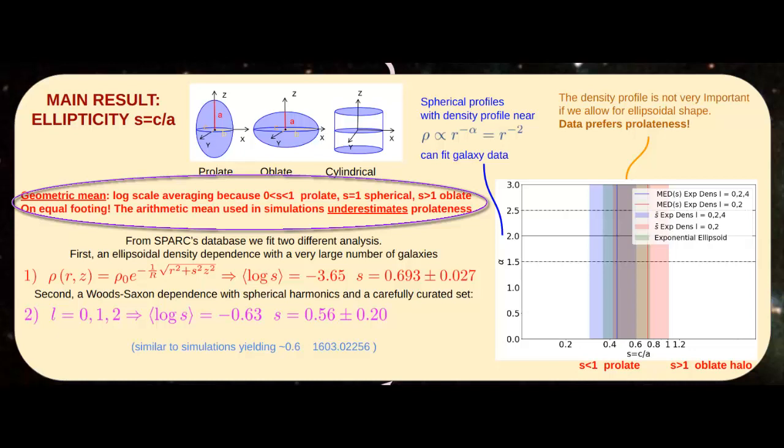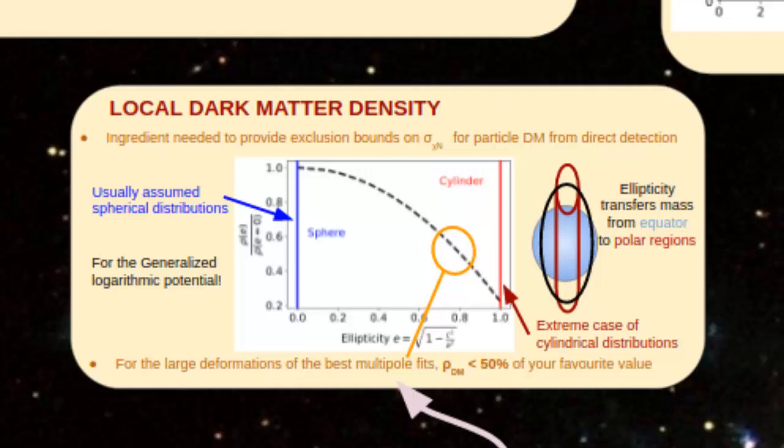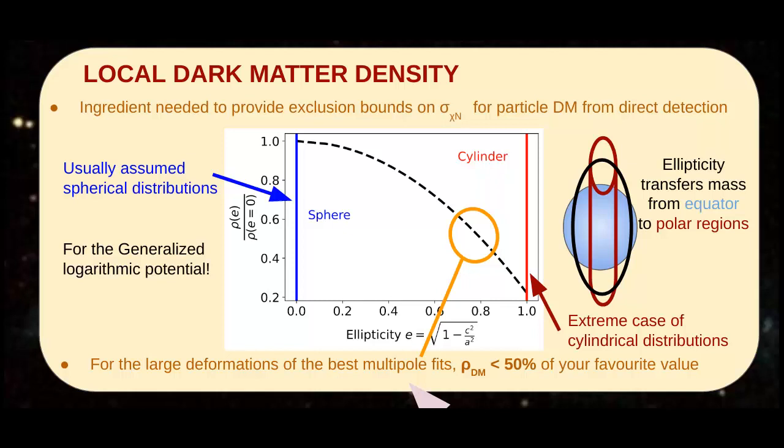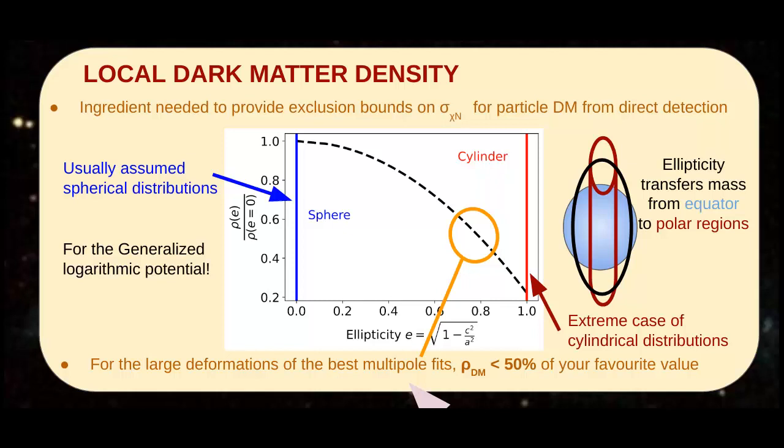Employing the arithmetic mean introduces a bias toward oblateness. If the results for a typical spiral galaxy are adopted for the Milky Way, we find that the supposed dark matter density near Earth can be up to a factor 2 smaller than usually employed to characterize direct searches, since dark matter is not concentrated on the galactic disk, but above and below. A scientific paper detailing all the analysis will follow shortly on arXiv.